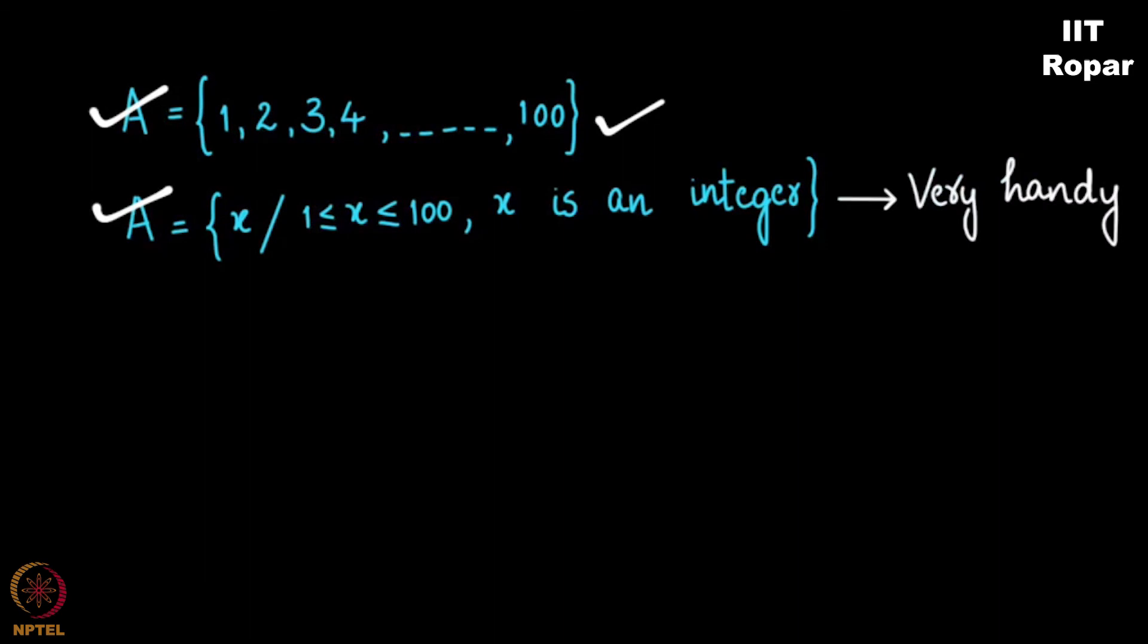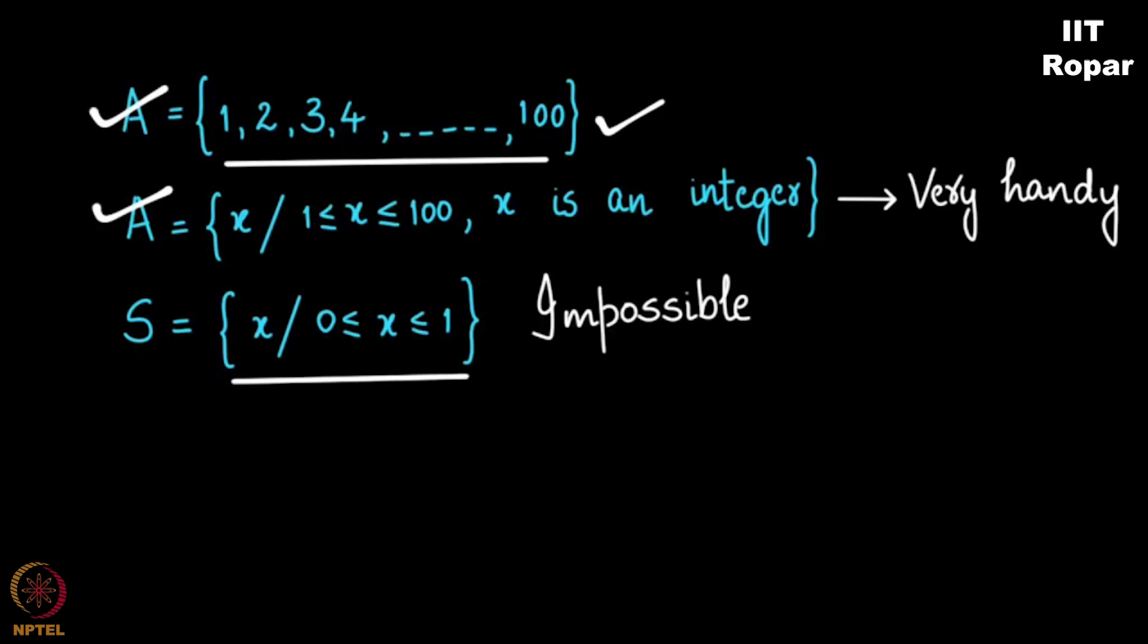But it becomes very handy for you to write something like this. For example a set S comprising of all those real numbers between let's say 0 and 1. Now it is not just difficult but impossible to enumerate it like this. There are times when you may want to enumerate it with a definition like this. So a set can be written this way also. Don't worry much, with a lot of examples things will become very clear to you.